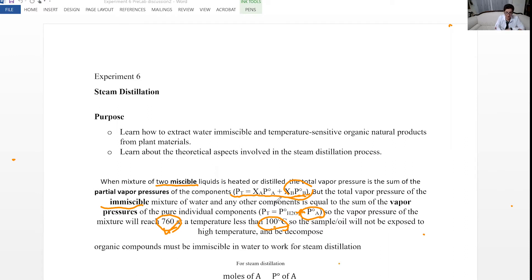As a result, the total vapor pressure is going to reach 760 at a temperature less than 100. Since the temperature is going to be less than 100, that is going to protect the sample from decomposition and less heat is needed for distillation. Organic compounds must be immiscible. That's the condition, as I said.